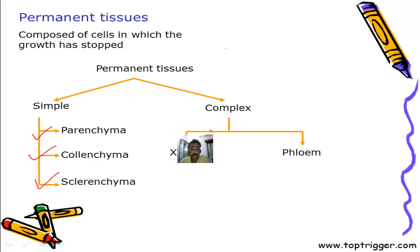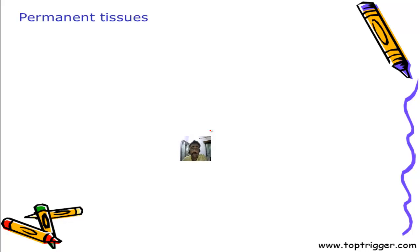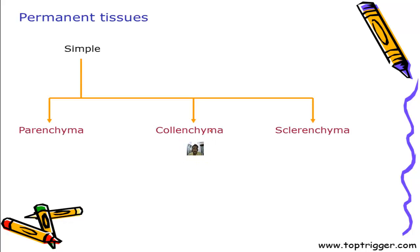Let's have a look at simple permanent tissues. First, let's have a comparative account of all three — parenchyma, colenchyma and sclerenchyma. These can be primarily differentiated on the basis of the thickening of the wall and whether the cells are living or non-living.